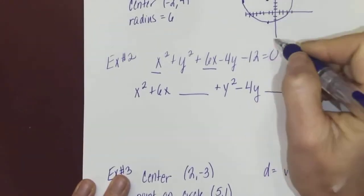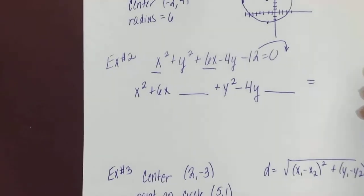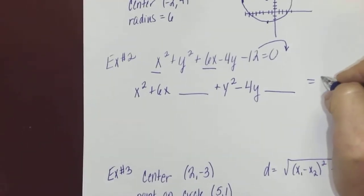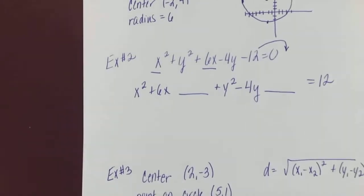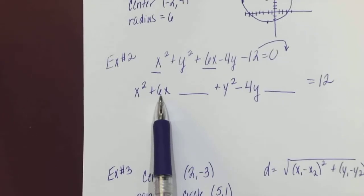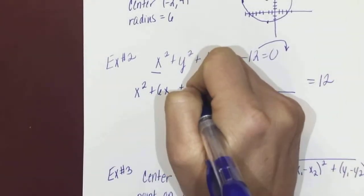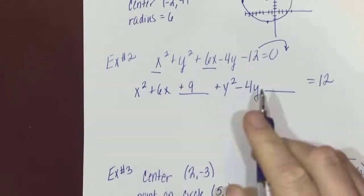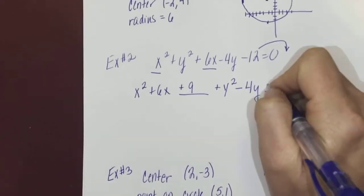This -12, I will take to the other side because it's neither an x term or a y term of any sort. So when I bring that over, that -12 would become +12. Hopefully you remember from Algebra 2: to complete the square, you take half of this term and square it. Half of 6 is 3, 3 squared is 9, so I'm going to add 9 on this line. Half of -4 is -2, and -2 squared is 4.